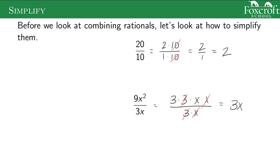The important thing is there has to be multiplication between these different parts when you decide to cancel. If this was 3 plus x over 3, you cannot cancel out those 3s because of the plus sign. There's a difference between a plus sign and a multiplication sign. So only cancel things out when it's multiplication, not addition or subtraction.